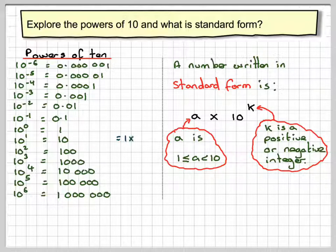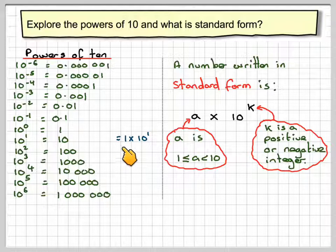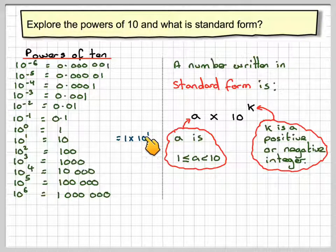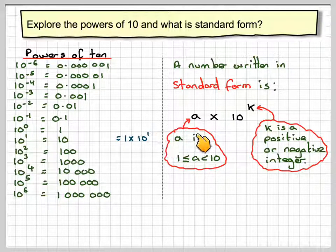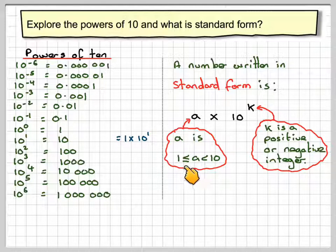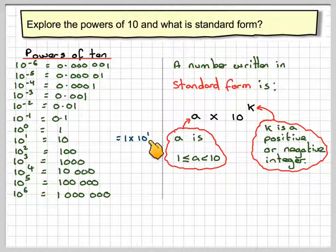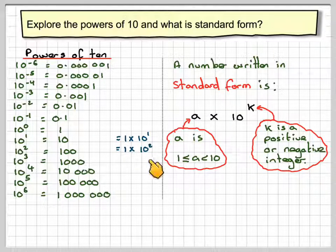Let's have a look. In our first case, 10 to the 1 is 1 times 10 to the 1. This is now written in standard form. a is 1 in this case, which fulfills that condition, and k is a positive integer. 1 times 10 to the 2 will be 10 squared. All these numbers can be written in standard form.